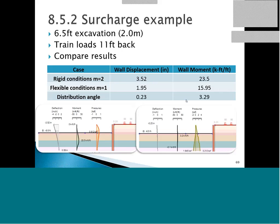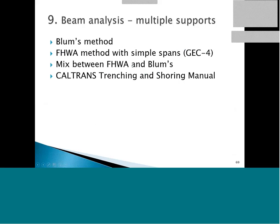You have to always ask yourself: what is reality? Sometimes when talking to officials from authorities, it's very hard to convince them that the distribution angle approach might be the correct way, because they legally have to go by what is in their design book. Looking at beam analysis methods for multiple supports: we have the BLAMS method, FHWA with simple spans from the geotechnical circular, a mix between FHWA and BLAMS, and CalTrans. Let's look at each one of these methods.